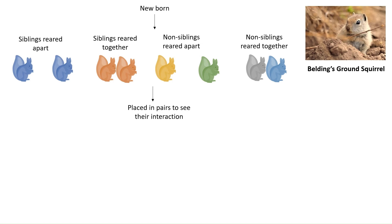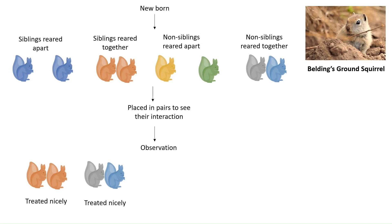After they are grown up or become sexually mature, they are placed in pairs to see their interaction. The observation made is that whether or not the squirrels are siblings, those who were raised together treated each other very nicely.